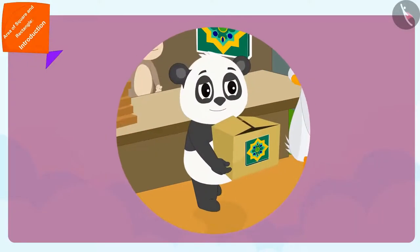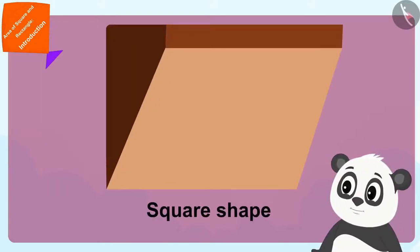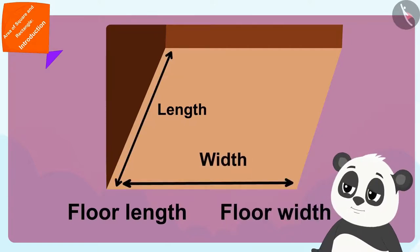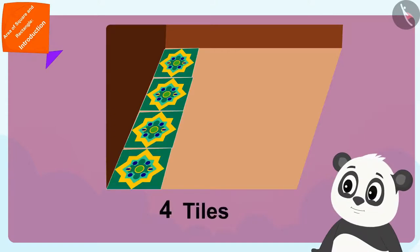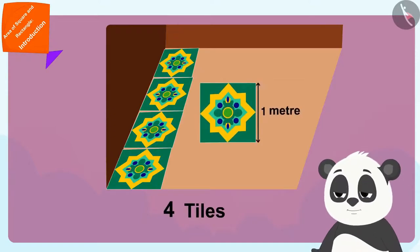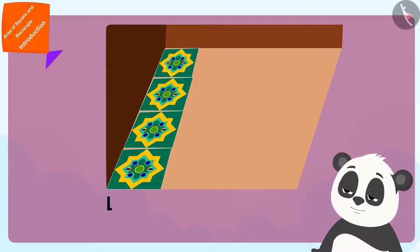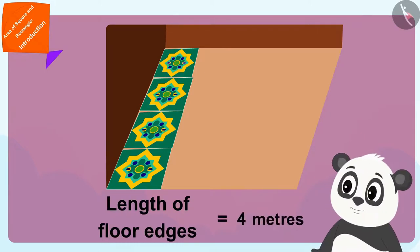Come, let's see what Golu is doing. Golu's floor is square shaped. So the length and width of his floor are exactly equal. He has laid four one meter long tiles along the edge of his floor. This means the edge of his square shaped floor is four meters long.